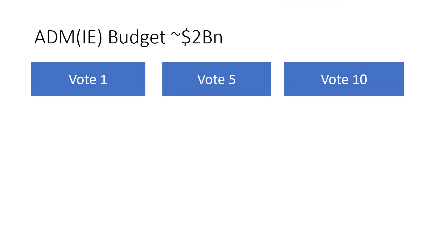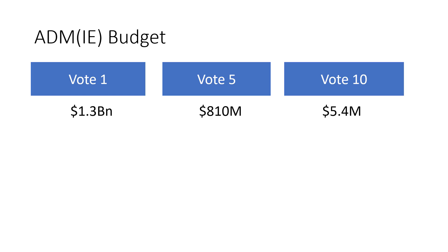The key thing to remember is that the budget is approximately $2 billion a year, and we have the same Vote 1, Vote 5, Vote 10 breakdown. Within ADMIE, Vote 1 is about $1.3 billion, Vote 5 is $810 million, and the Vote 10 budget is $5.4 million.